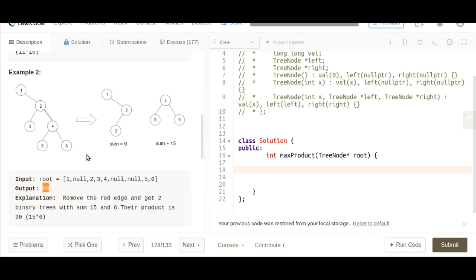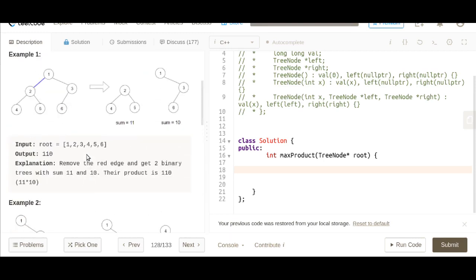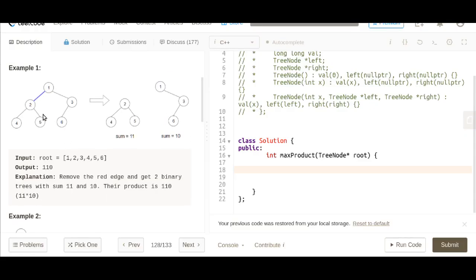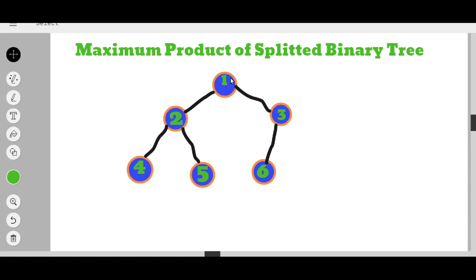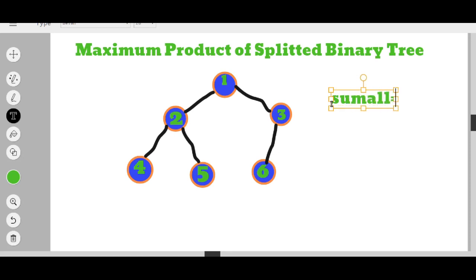For this particular tree we have 90 as the maximum value once you split on the right edge. To approach this problem, first we need to compute the sum of all the nodes in this tree. Let's call it sum_all. If you add 3 plus 2, 5 plus 1, 6 plus 4, 10, 15, and 21 - it gives you 21.